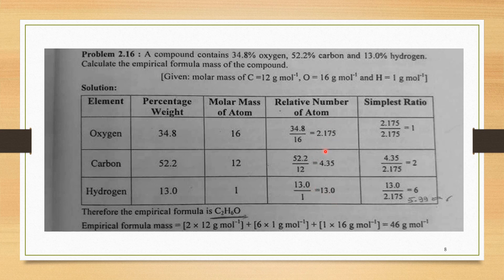Since the ratios are fractional, we divide by the smallest ratio of 2.175. This gives: oxygen = 2.175/2.175 = 1, carbon = 4.35/2.175 = 2, hydrogen = 13/2.175 ≈ 6. Therefore, the empirical formula for the given compound is C2H6O.